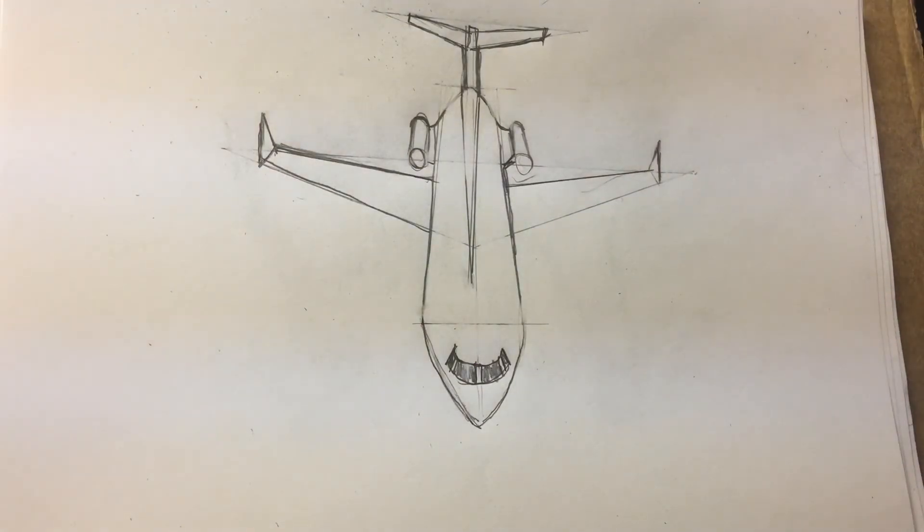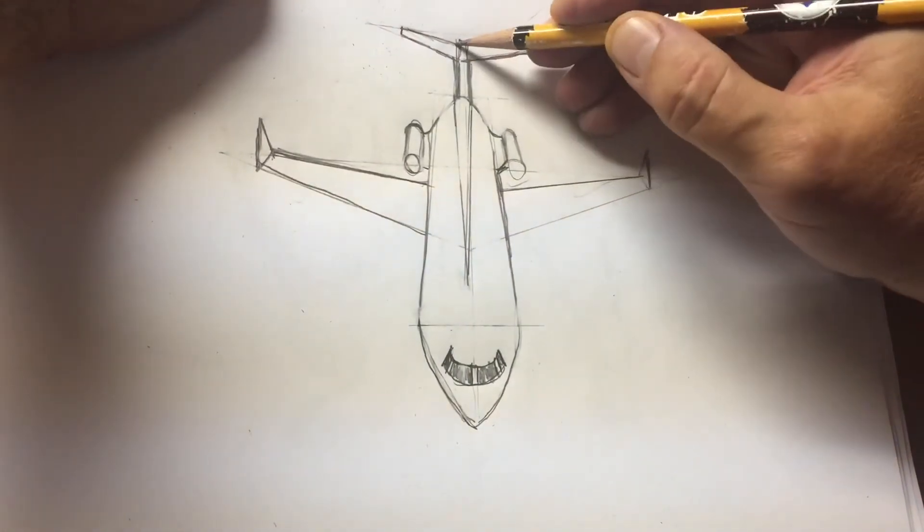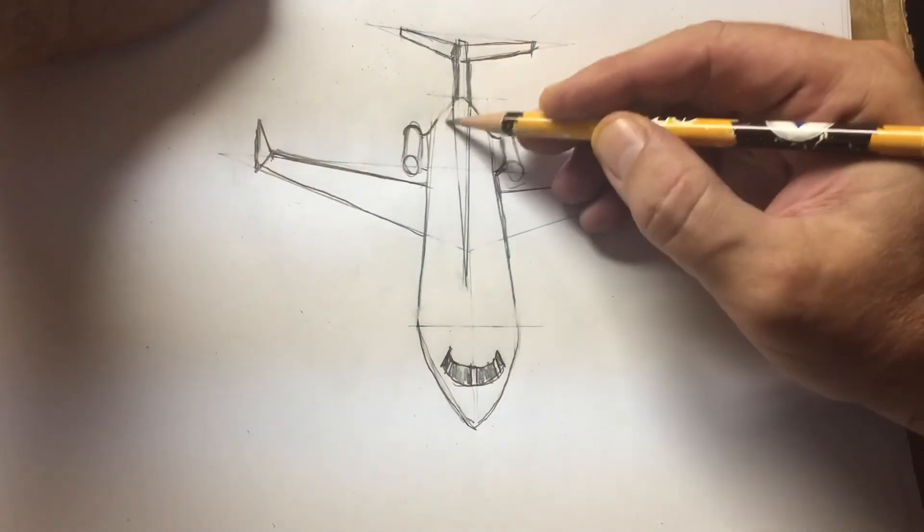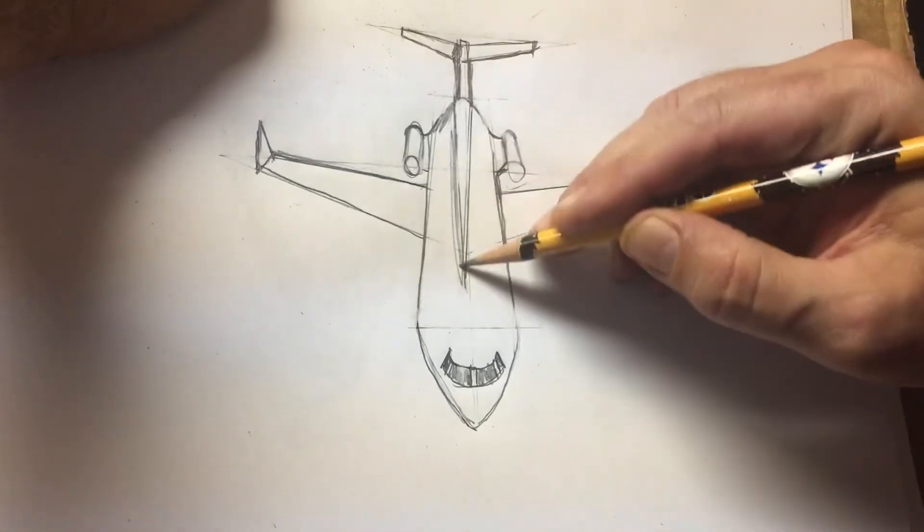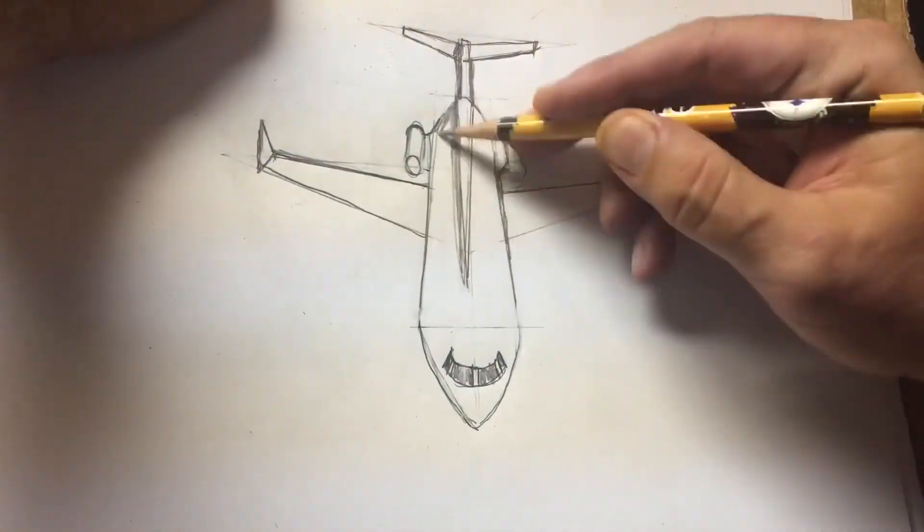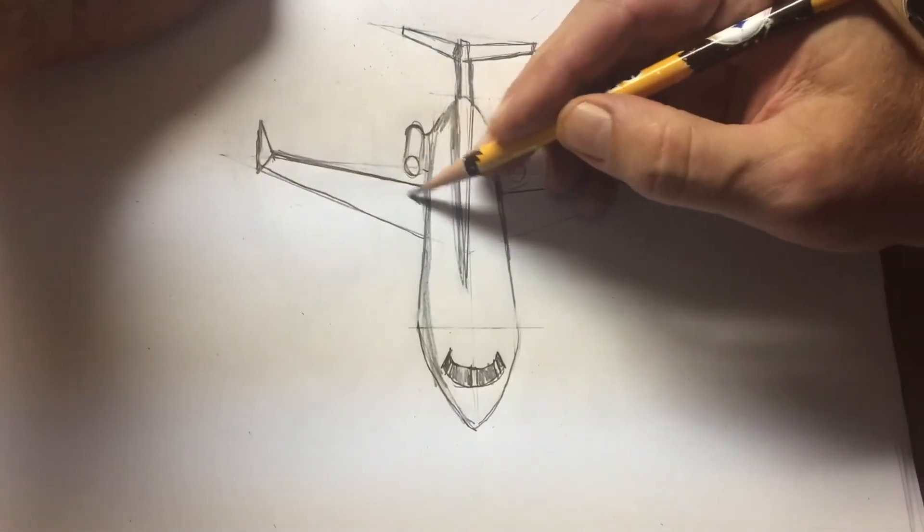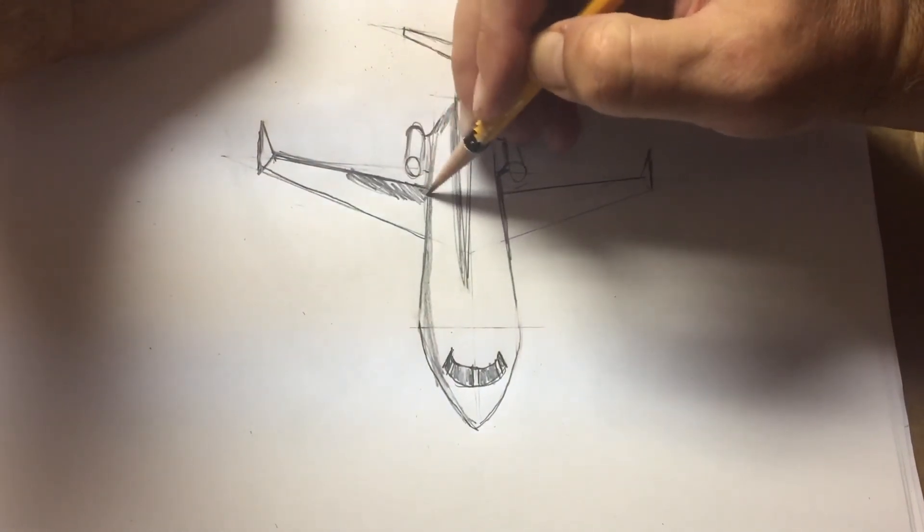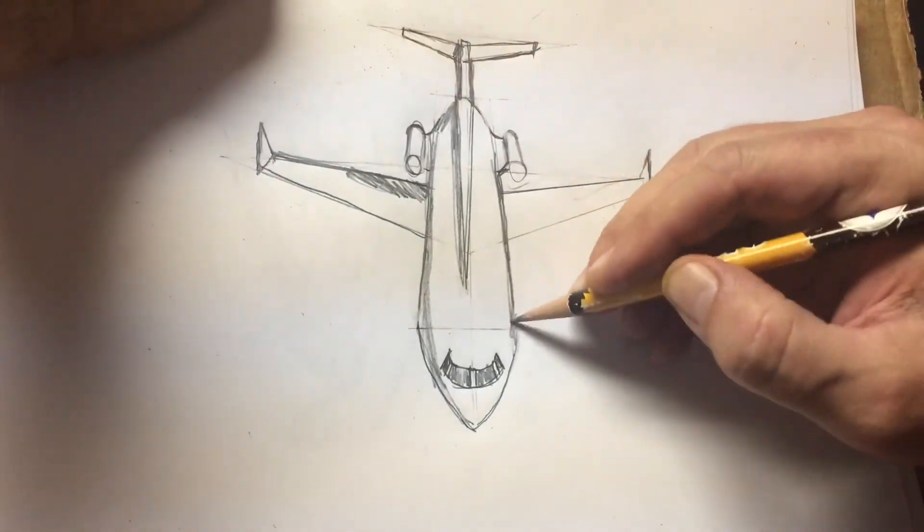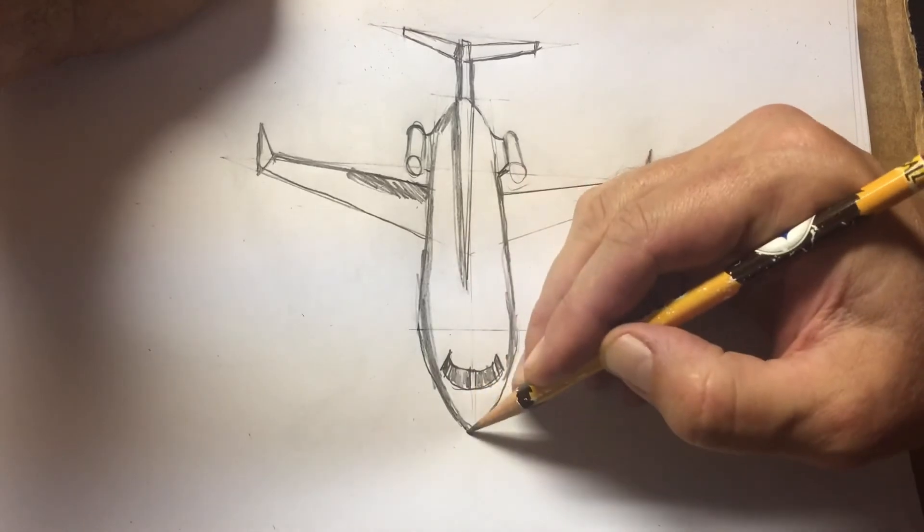Let's add some shadow on the left side of the Gulf Stream. And so add some shadow on the wing, we'll add a little bit on the right side, but not as much as the left.